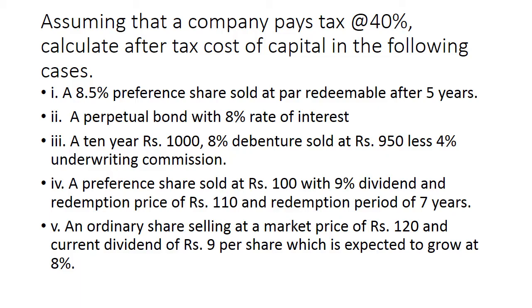In first case, 8.5% preference shares are sold at par redeemable after 5 years, which means the maturity period is 5 years. They are redeemable at par, which means there is no difference between face value and redemption value or the net proceed. And the rate of dividend is 8.5%.